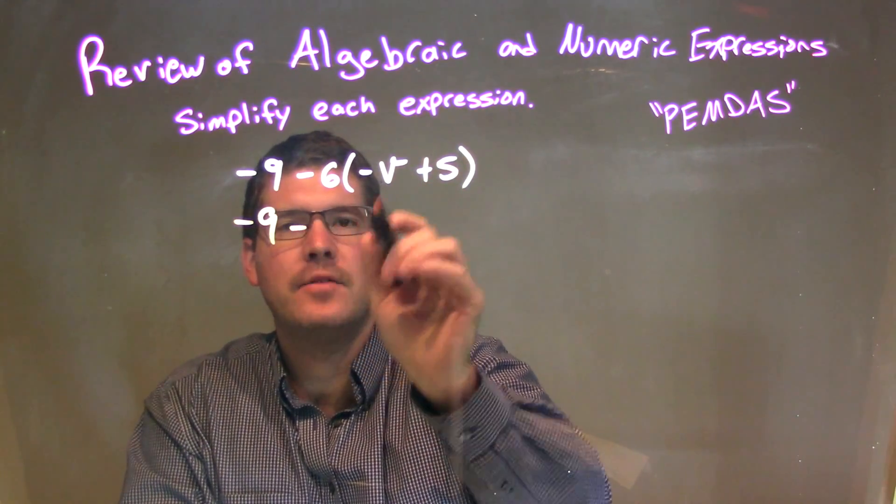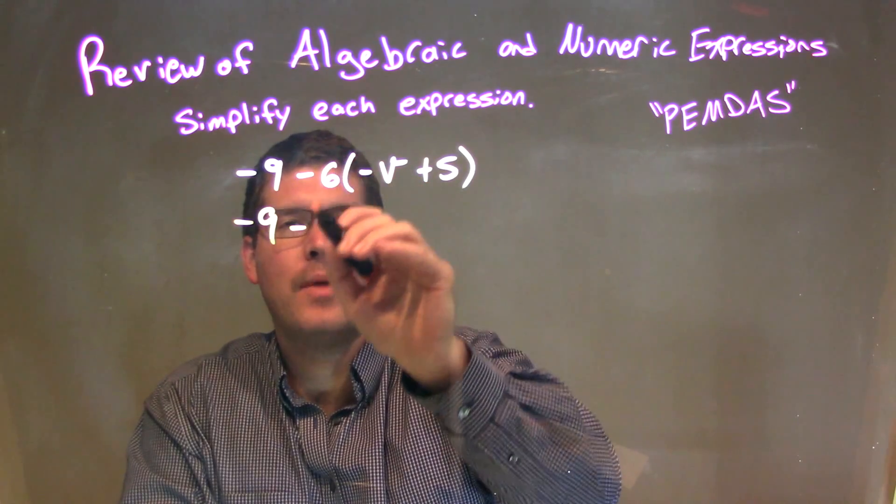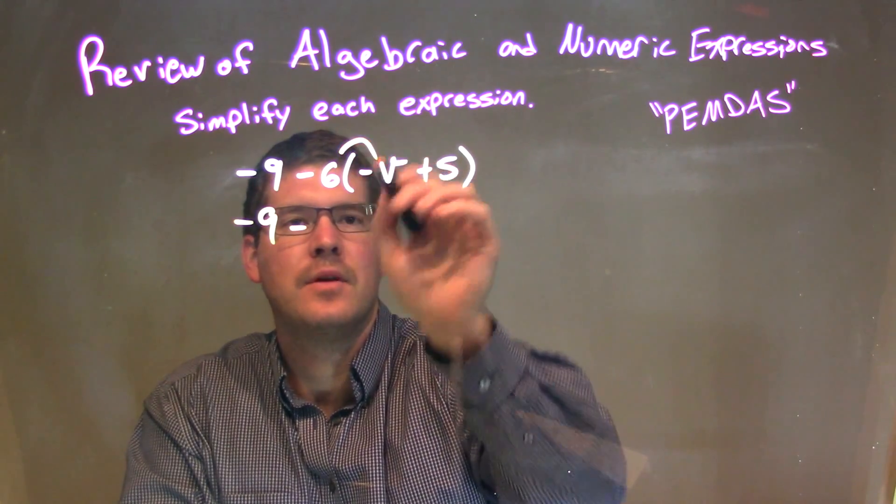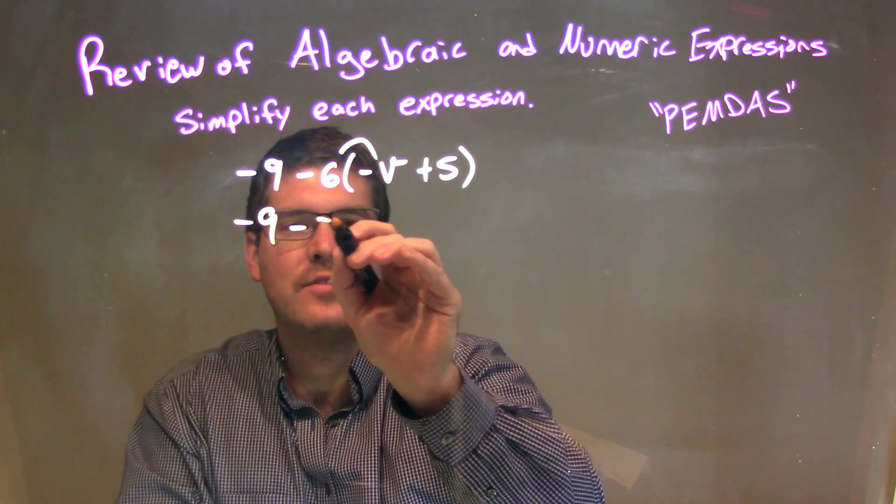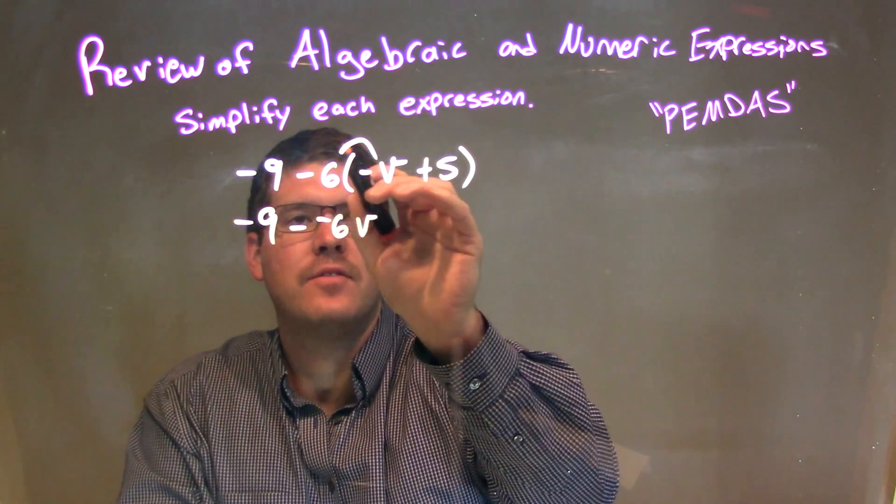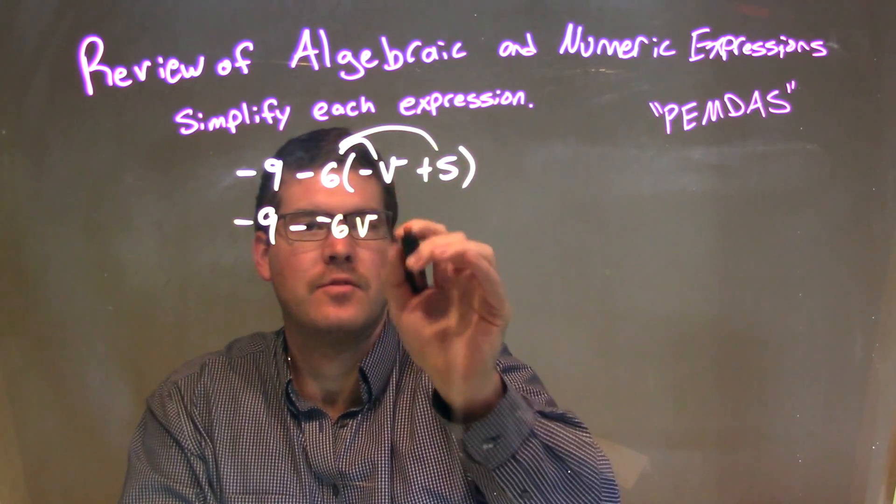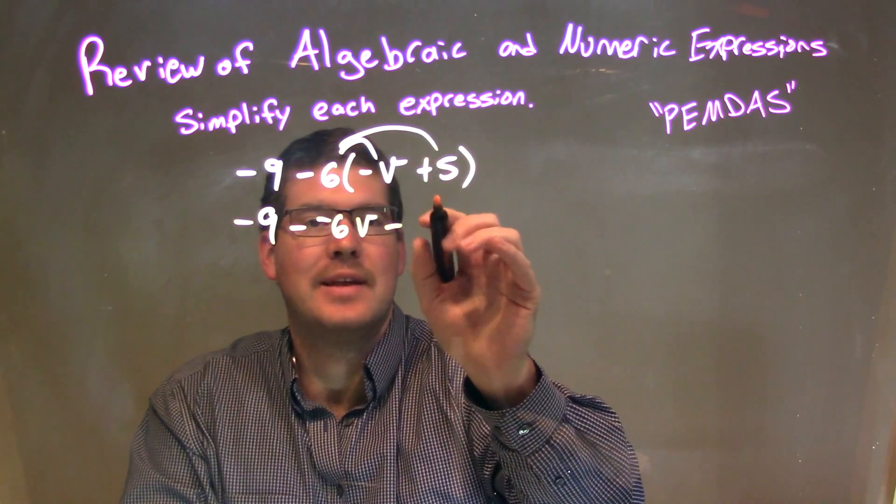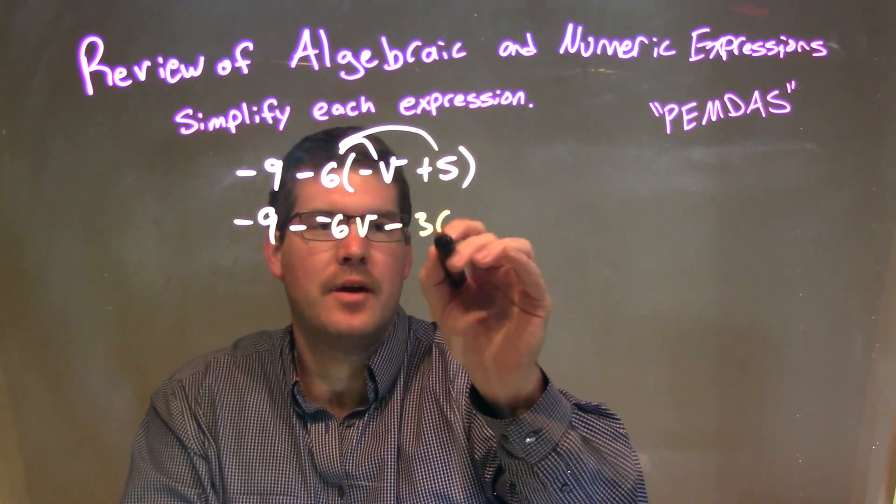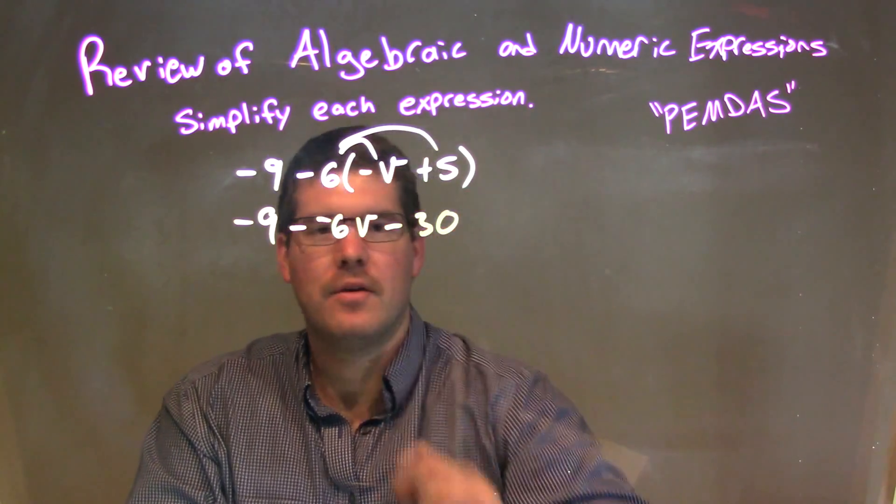So, negative 9 comes down, minus 6 times negative v is negative 6v. And negative 6 times 5 is negative 30, or minus 30. Right there is a subtraction sign.